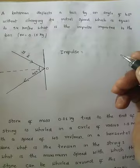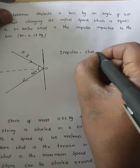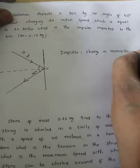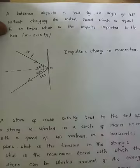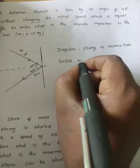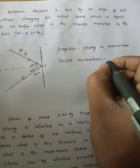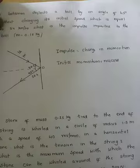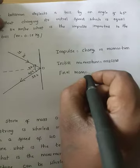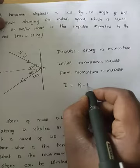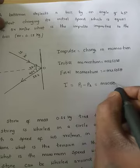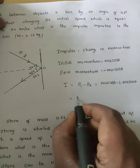Impulse is equal to change in momentum, that is initial momentum minus final momentum. If we divide this 45-degree angle into two equal parts, we get 22.5 degrees and 22.5 degrees. The initial momentum equals m·u·cos(theta). The final momentum is also the same magnitude but its direction is opposite.